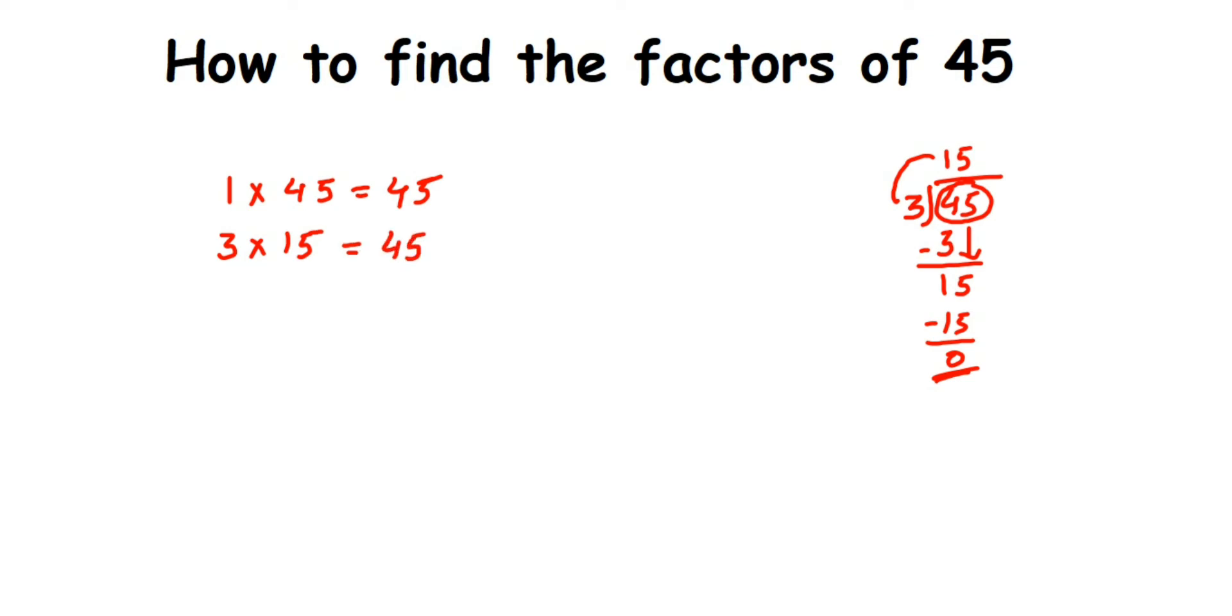Next is 4, but again, 4 is an even number so 45 doesn't go there. Then 5—we know that 5 × 9 = 45, so we get 5 × 9 = 45.